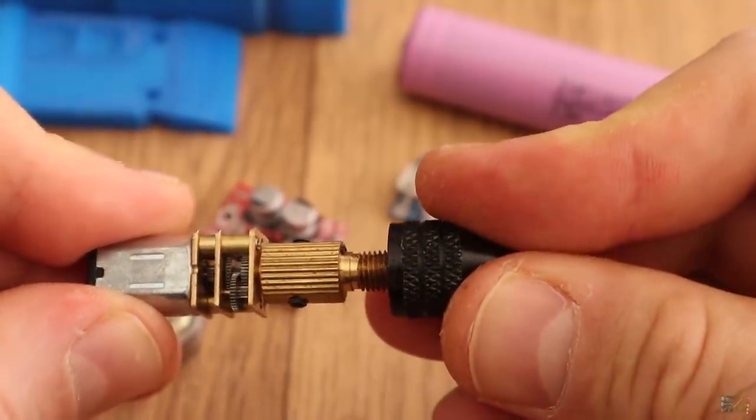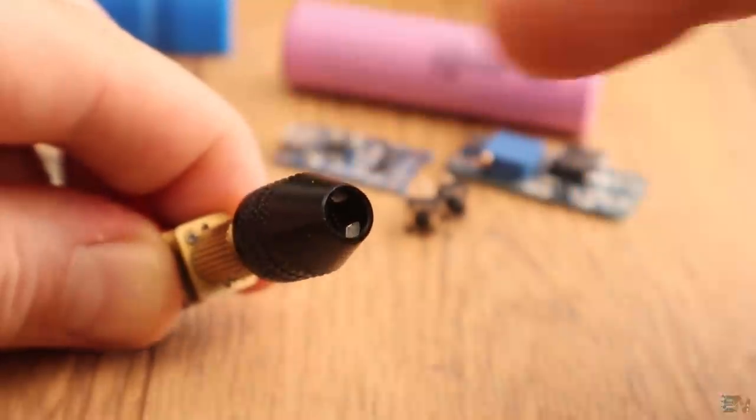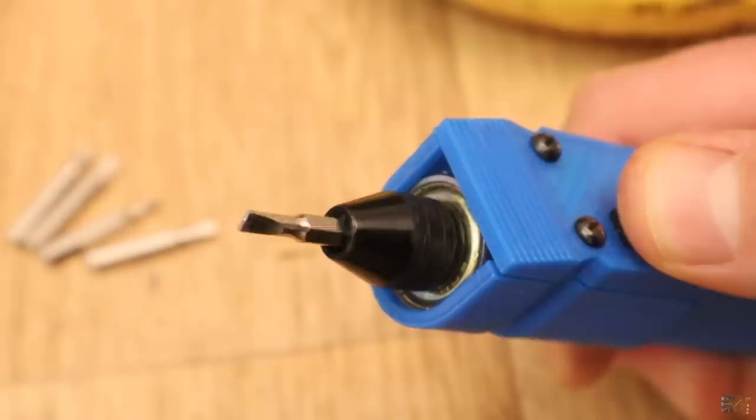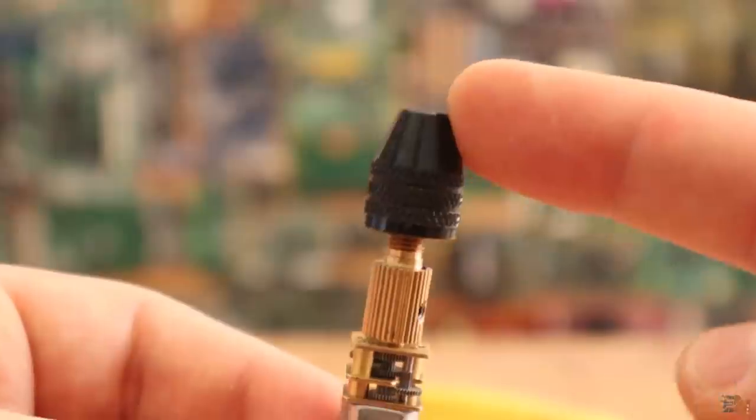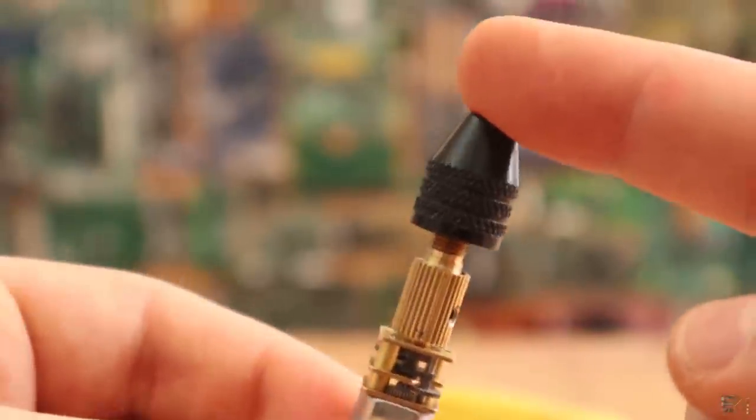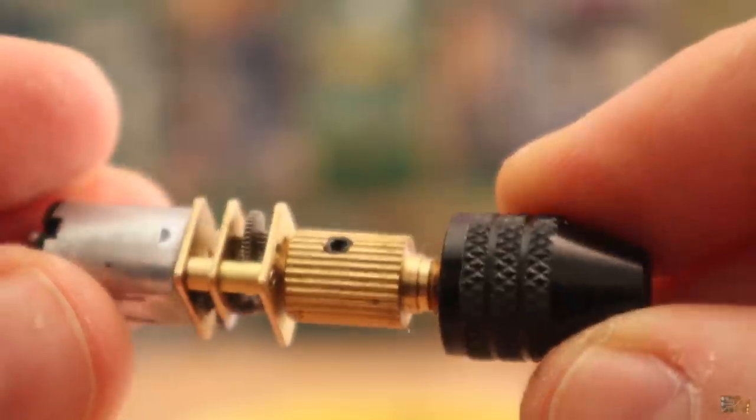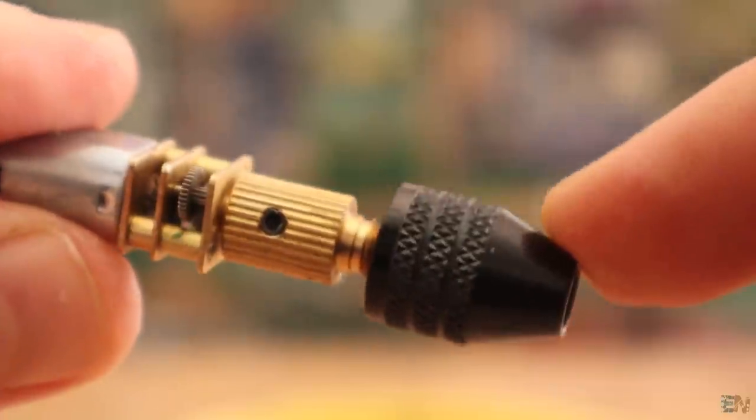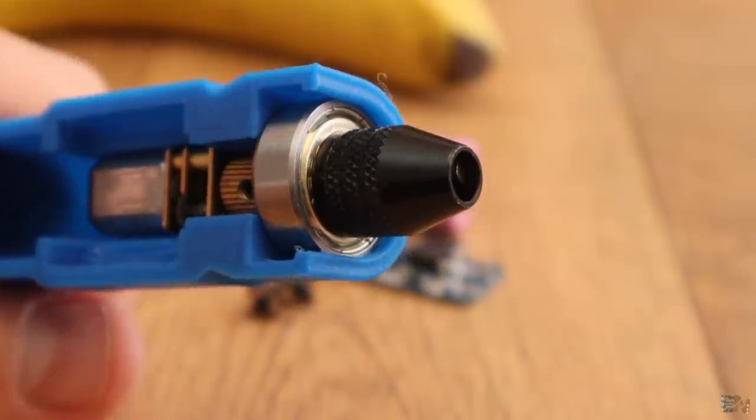This drill bit support will get screwed onto the motor shaft, and then we could tighten this and insert our screwdriver tip or even a small drill bit. We will use the bearing as a support. As you can see, the motor shaft with the drill bit support is quite long, and the force will be applied to the tip of this support. So that will create a lot of movement and probably will damage the motor shaft. So we will put this bearing next to the support, and that will make this more stable.